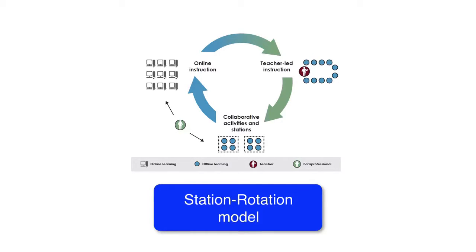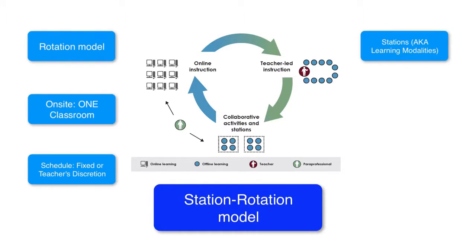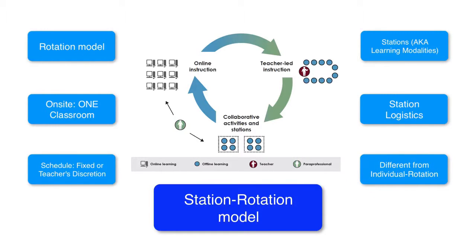You can learn more about their blended learning profile on the Clayton Christensen Institute website. This blended learning model is a rotation model. The station rotation model occurs only on-site at school. A student's schedule in the station rotation model is either fixed or determined by the teacher's discretion. Students in this model go through different stations or learning modalities within their respective classes. At least one station is online learning, while the other stations could include small group or full class instruction, tutoring, projects, or paper and pencil assignments. The station rotation model is different from the individual rotation model in that students actually rotate through all the stations instead of only being in certain ones.